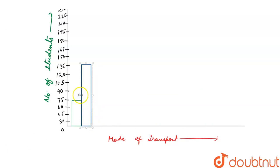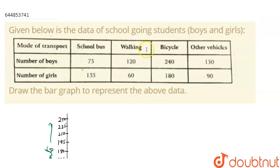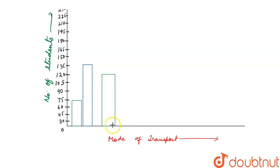These bars will not touch each other because we are making a bar graph. Now let's move to the next category, which is walking. Number of boys who walk is 120, so we make the green bar at 120.